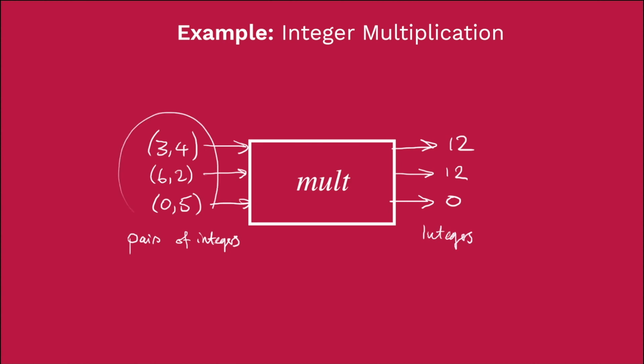So the type of thing that we feed into the function, the type of input to the function is what we call the domain. And the type of thing that it gives us back in return as output is what we call the codomain, sometimes called the range.